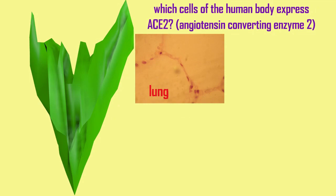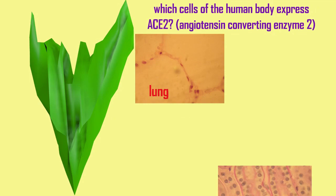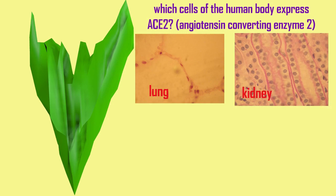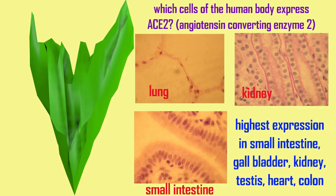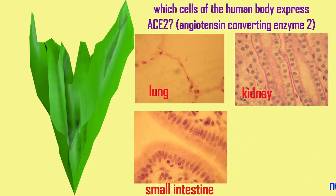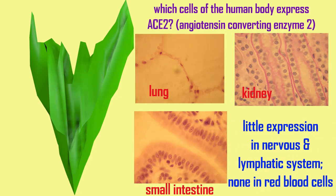While the focus is primarily on the lungs, this enzyme is expressed on many cell types, including cells of the intestines, where it has its highest expression. Other regions such as the gallbladder, the large intestine, the testis, and other tissues also express ACE2.